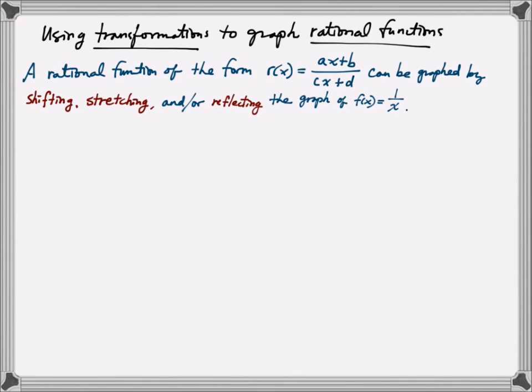A rational function of the form R(x) = (ax+b)/(cx+d) can be graphed by shifting, stretching, and/or reflecting the graph of f(x) = 1/x. Notice that the rational function has to be of the form of a linear polynomial over a linear polynomial in order for us to do this. So it's essential to look at the graph of f(x) = 1/x and then just apply the known transformations to it to get to the resulting R(x).